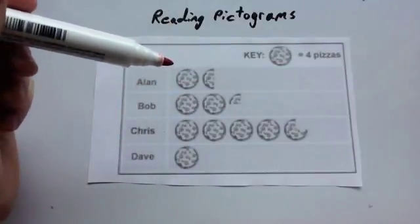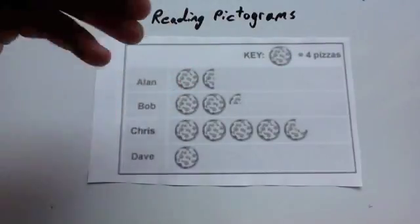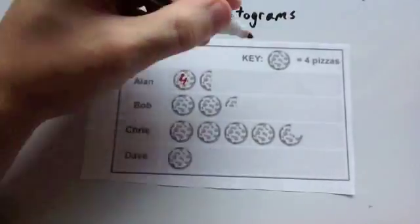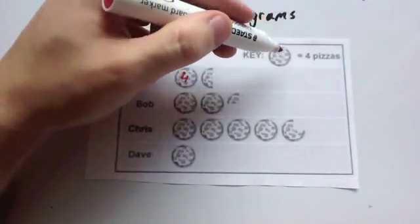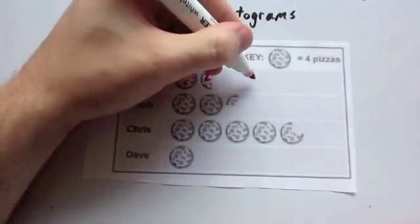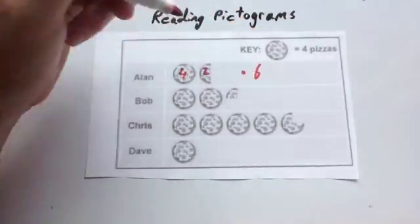So here's got Alan, and he's got one pizza, so that would be four. And then he's got half a pizza. Well, if one pizza's four, well, half a pizza then would be two. So that means altogether he's eaten six pizzas.